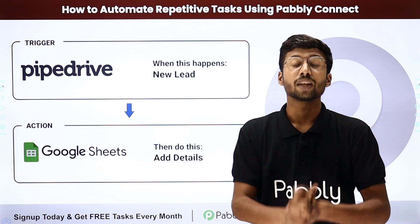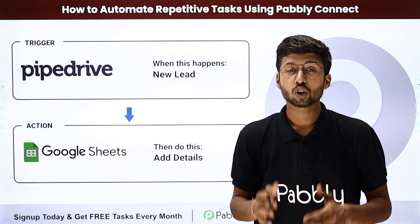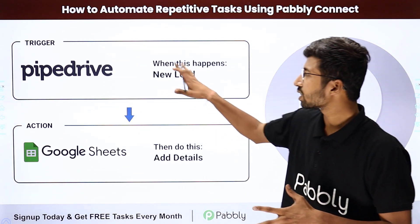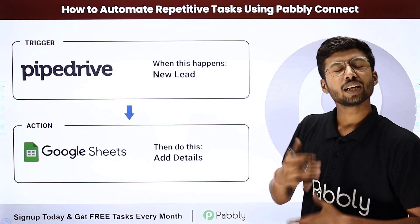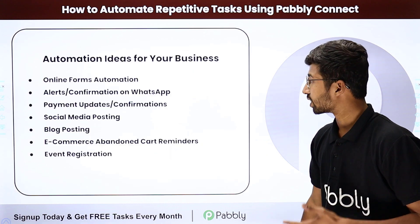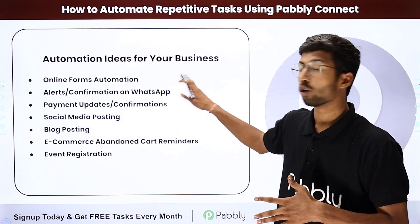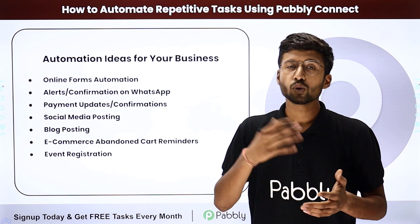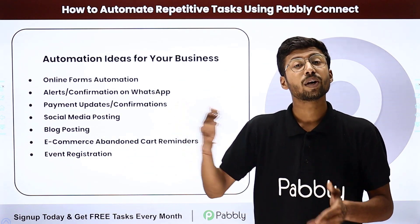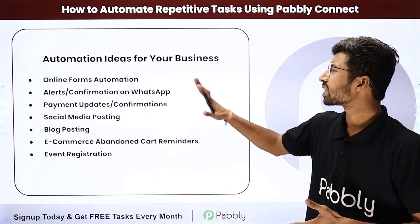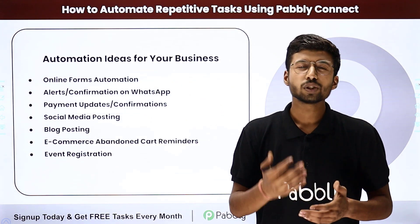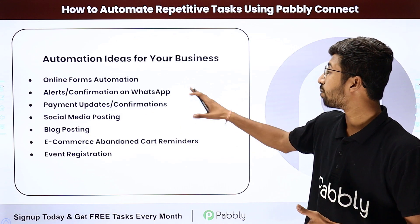This is just a simple example. You can manage or automate various aspects of your business. Let's discuss what those are. We'll cover the Pipedrive and Google Sheet automation later in this video. Other use cases include online form automation — you can automate form submission responses and add that data into other applications using Pabbly Connect. Another use case is alert confirmations on WhatsApp, which is a great way to increase the personal touch with your customers.